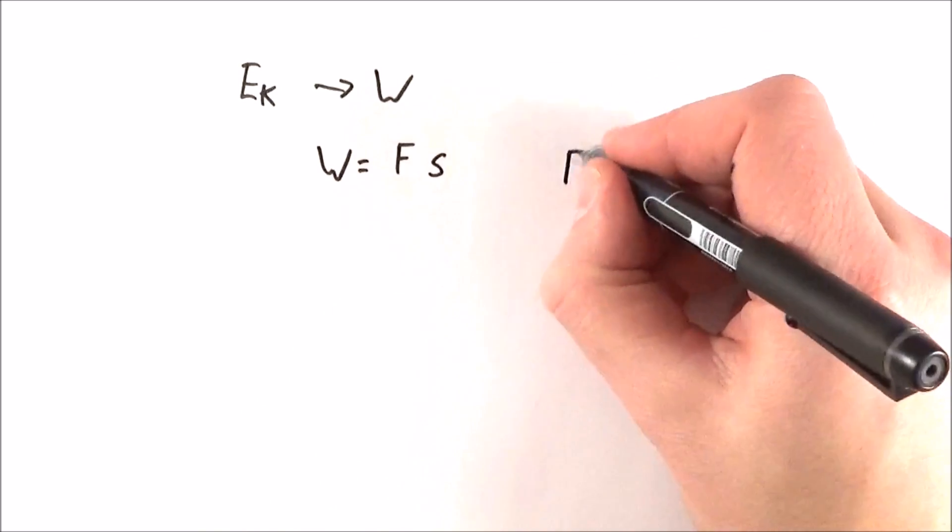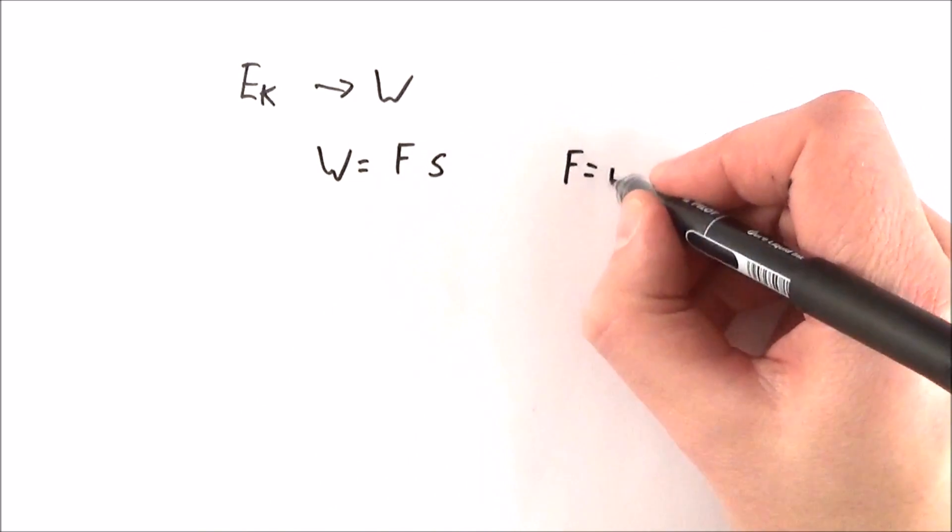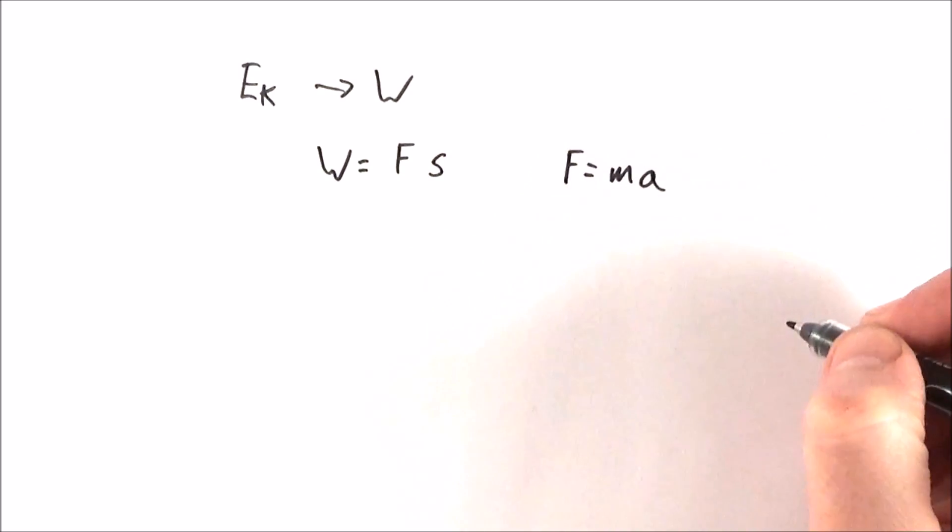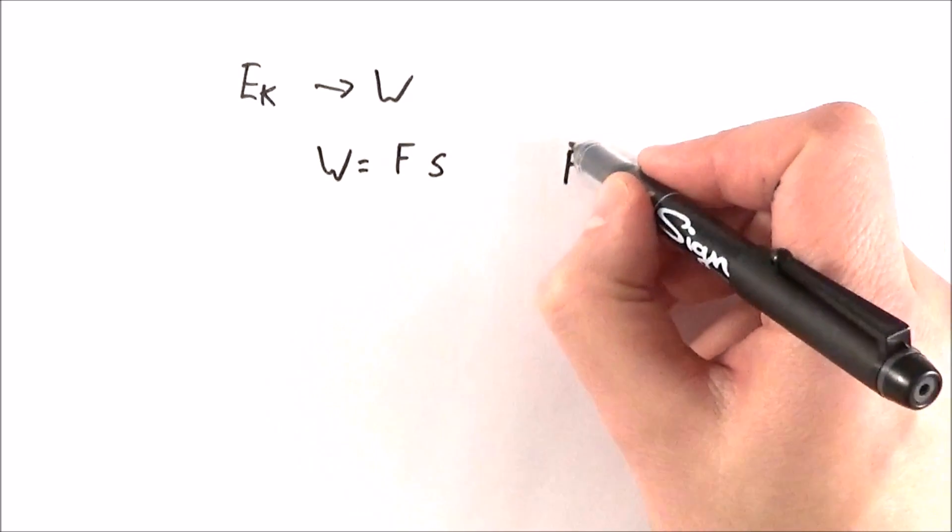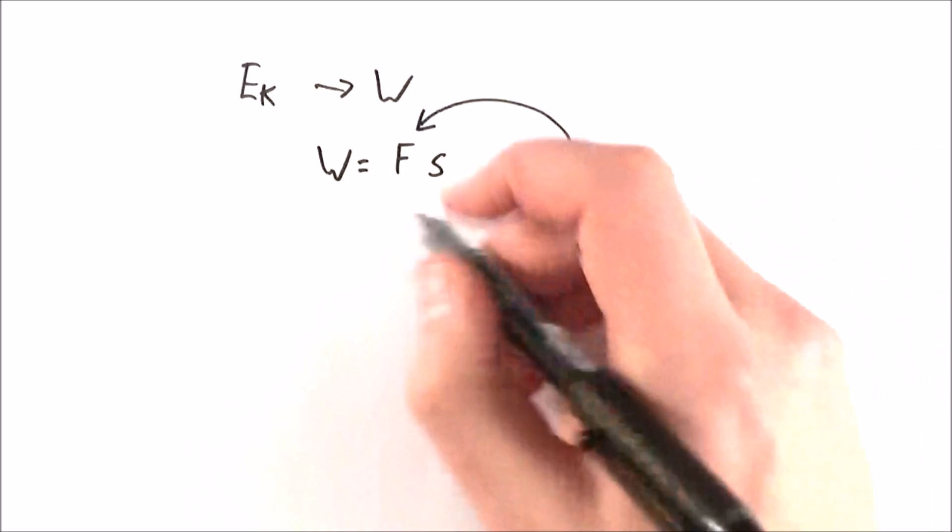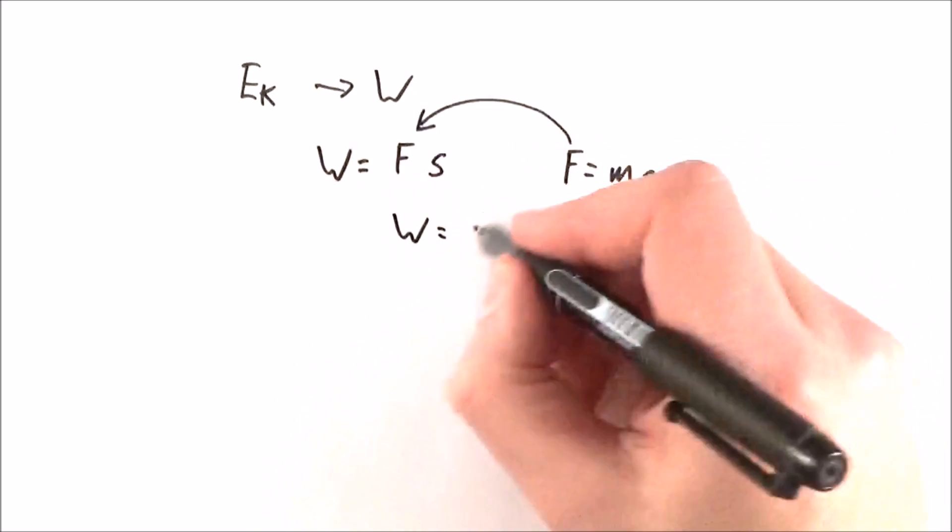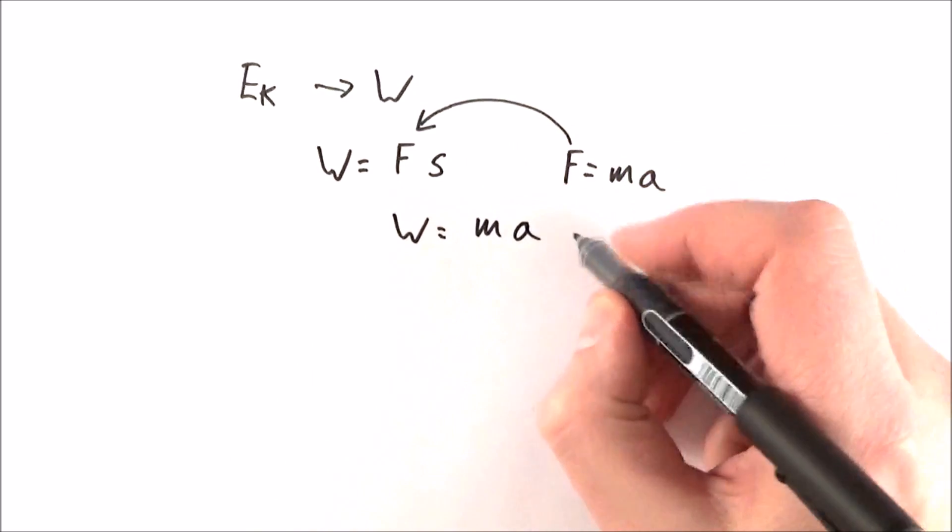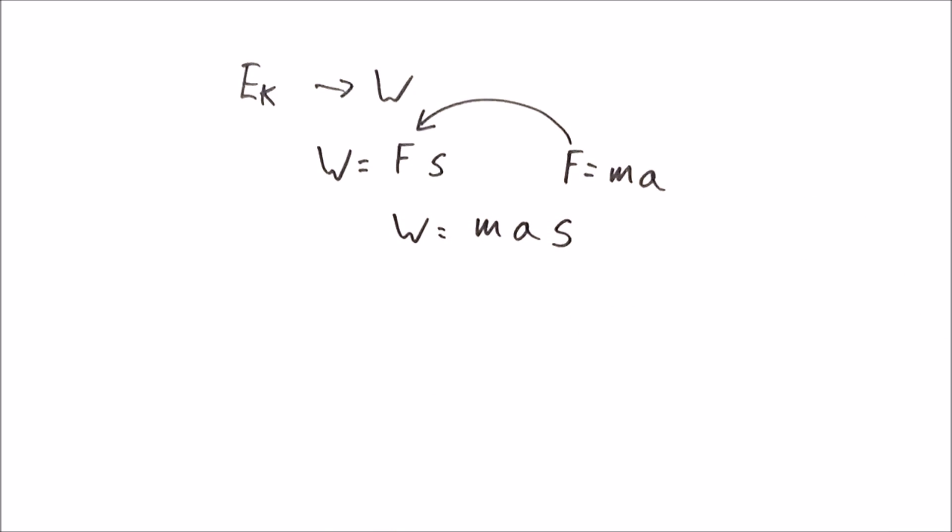We also know that by Newton's second law, force is equal to mass times acceleration. And what I can do is substitute that force into there. So we can say that the work done is equal to mass times acceleration times the distance that it's moved through.